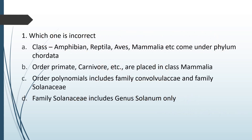Which one is incorrect? Classes Amphibia, Reptilia, Aves, Mammalia, etc. come under phylum Chordata. Order Primate, Carnivore, etc. are placed in class Mammalia. Order Polynomials include family Convolvulaceae and family Solanaceae. Family Solanaceae includes genus Solanum only. The incorrect statement is option D — Family Solanaceae includes genus Solanum only is incorrect.